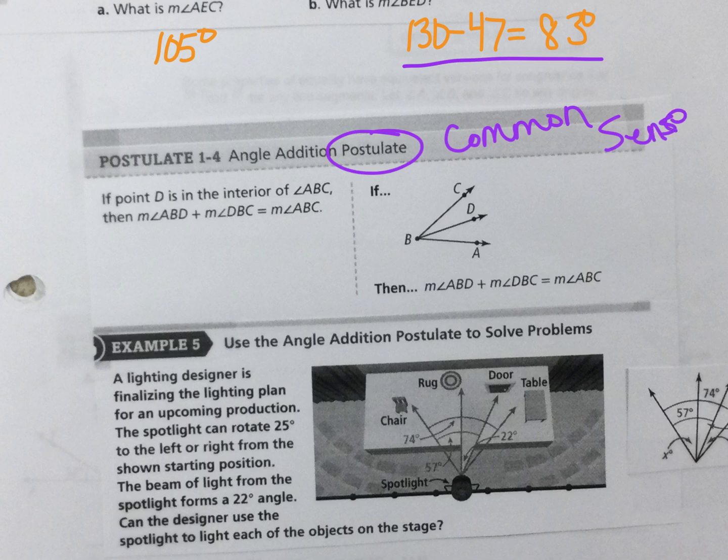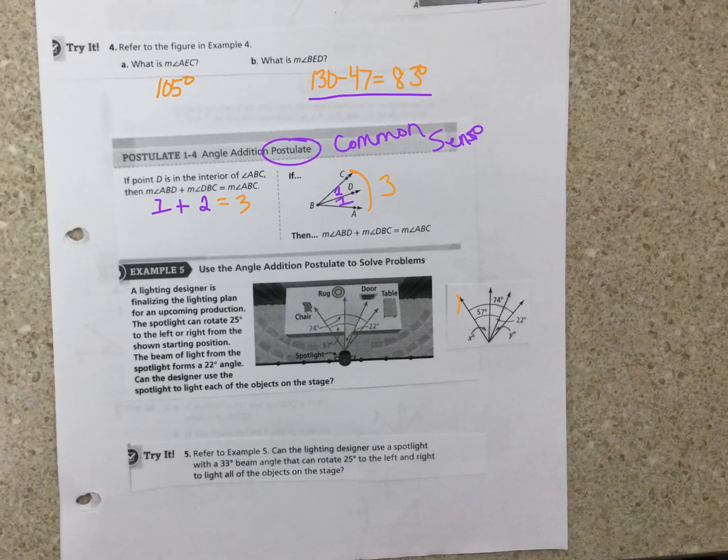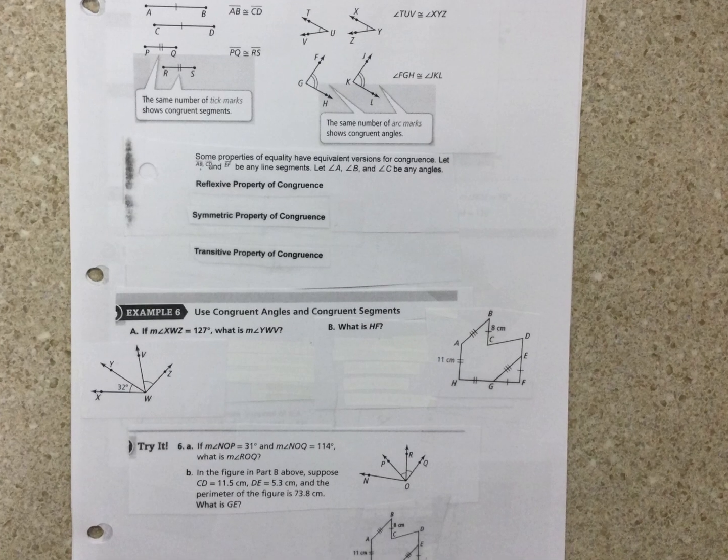Okay, so angle addition postulate. Again, postulate, it's just common sense. So it says if D is in the interior of angle ABC, then I know that angle ABD, I'm going to call that angle one, plus DBC, I'm going to call it angle two, will equal angle three, the whole thing. Piece plus piece equal the whole thing. And I think that's all we'll do today, we'll do the rest of these in class.